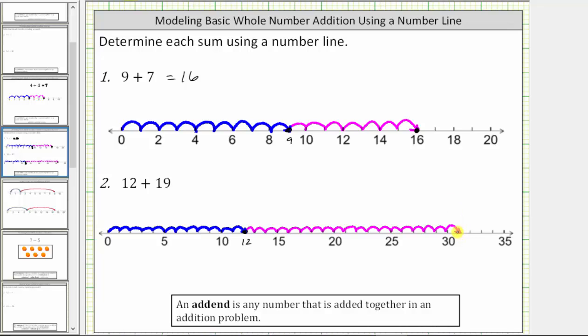Notice how this is 31 on the number line, which is the sum. 12 plus 19 equals 31. I hope you found this helpful.